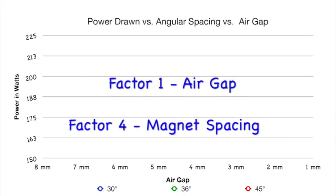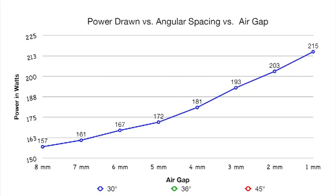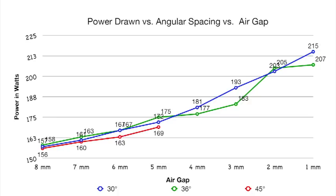Looking at the power data for magnet spacing — all using a 1mm thick copper disc — going from 8mm to 1mm air gap: the 30 degree separation goes from 157 to 215 watts; the 36 degree goes from 158 to 207 watts; and the 45 degree goes from 156 to 204 watts. As we increase spacing between magnets, it steadily drops the power draw.